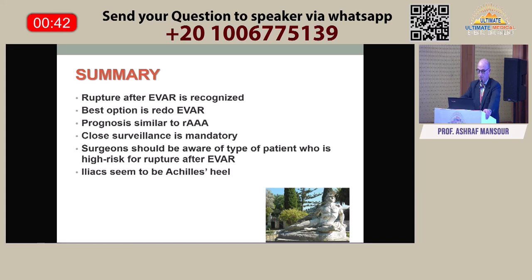To summarize: rupture after EVAR is a recognized problem. The best option is to perform another EVAR because explantation is quite difficult and complicated. The prognosis of these patients is slightly worse than patients presenting for elective surgery, but similar to patients who present with a rupture for the first time. The key is that close surveillance is mandatory and surgeons should be aware of the type of endoleak that puts a patient at risk of rupture. Thank you for your attention.